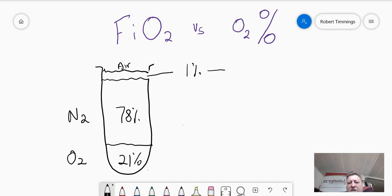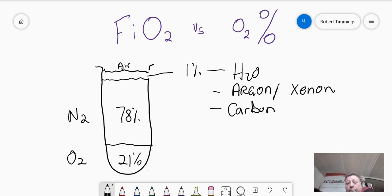That 1%, this is a mix of all the trace gases. So we've got water vapour, we've got argon, we've got xenon, we've got carbon. In fact there's numbers of different types of carbon byproducts. So we've got carbon monoxide, we've got methane, and then of course the one that most of us hear about in respiratory medicine, which is carbon dioxide.